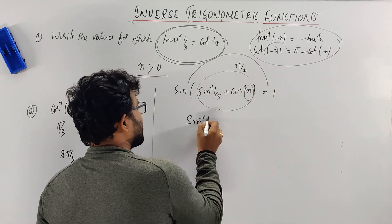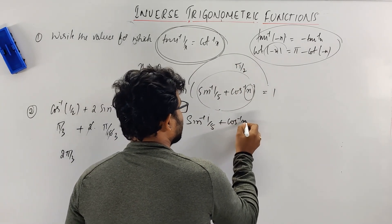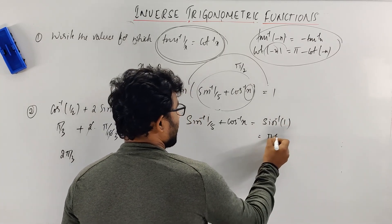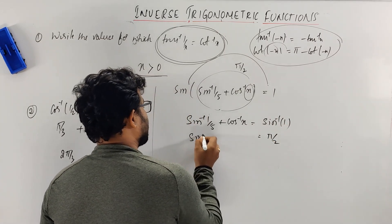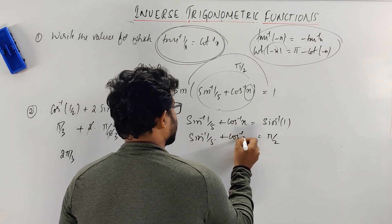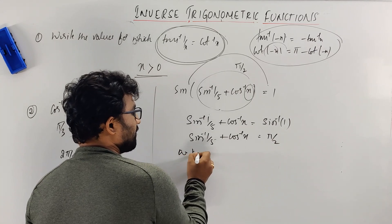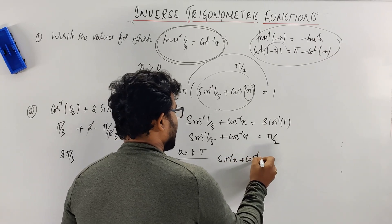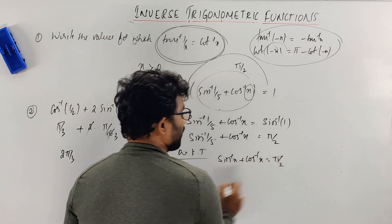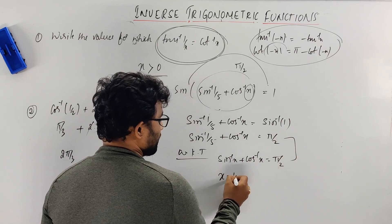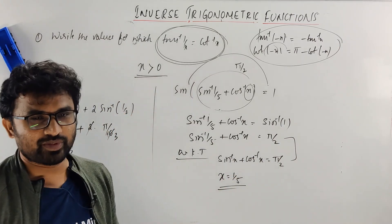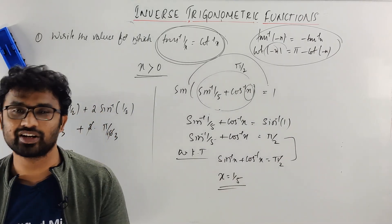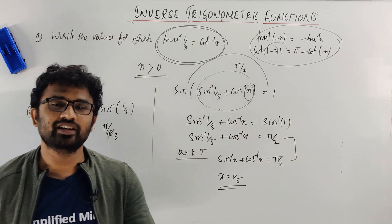You can show that sin⁻¹(1/2) + cos⁻¹(x) = sin⁻¹(1) = π/2. We know sin⁻¹(x) + cos⁻¹(x) = π/2. So comparing, x = 1/2. That's the beauty of mathematics — you can write the answers in minutes. In competitive exams, many questions can be solved in one minute if you know the concept. Steps still need to be shown.